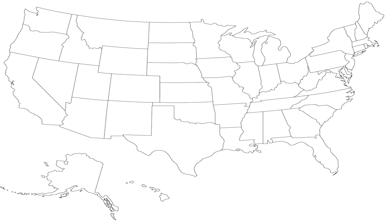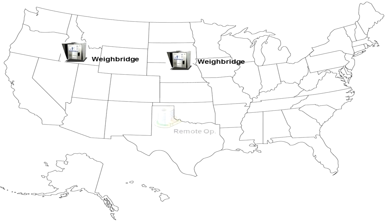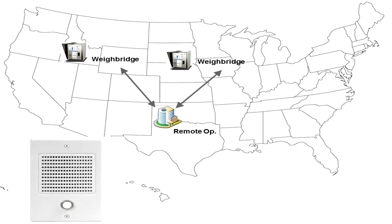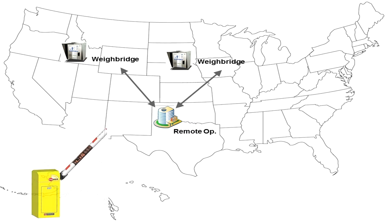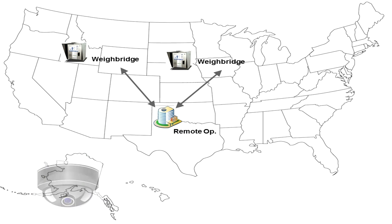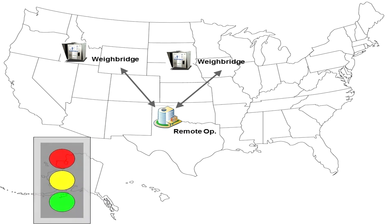With the DD Series Indicators, you can communicate with multiple devices across your network, whether it's in your backyard or across the United States. For instance, a Weybridge in Idaho and a Weybridge in Nebraska can communicate with a remote operator in Texas, who can communicate back with either of the DD Series Indicators and interact with them through peripherals such as intercoms, gates, cameras, and traffic lights.